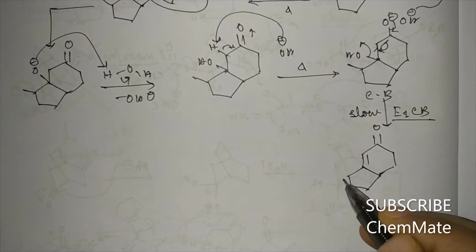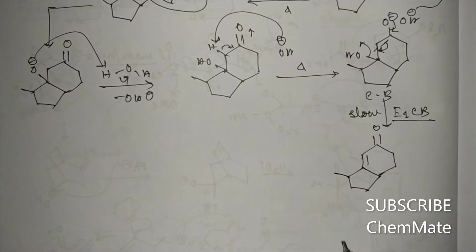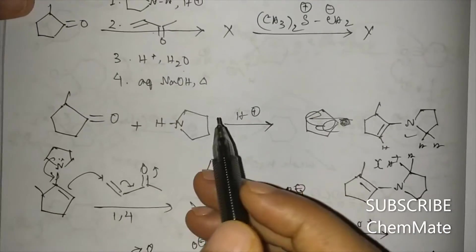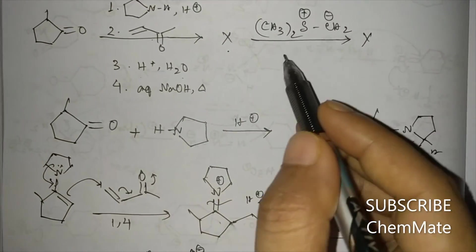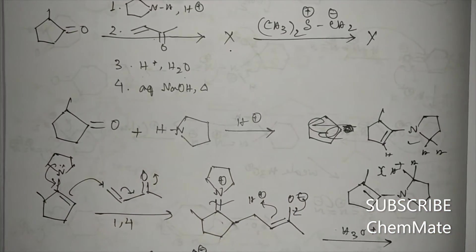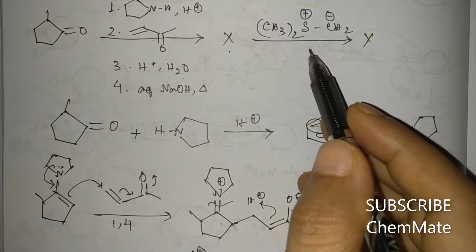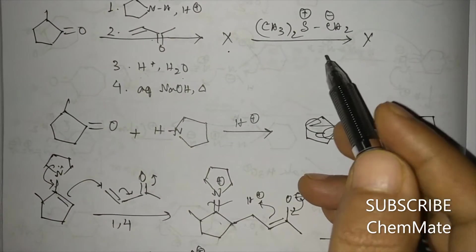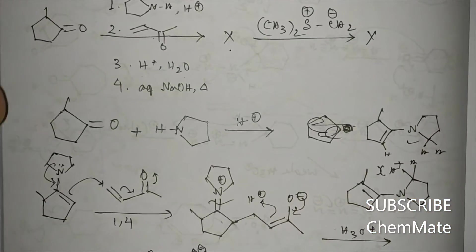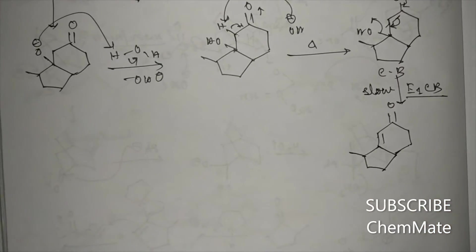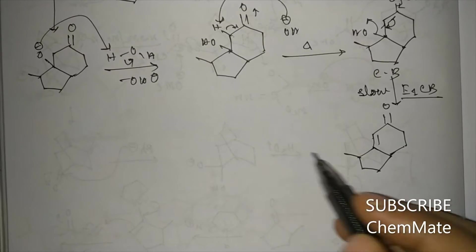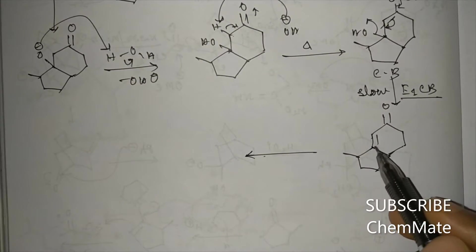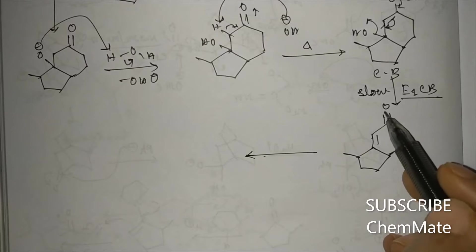This alpha-beta unsaturated carbonyl product with a double bond is product X. Now if it is treated with sulfonium ylide, a question of chemoselectivity arises — the sulfonium ylide may add to the alkene double bond or to the carbonyl double bond.